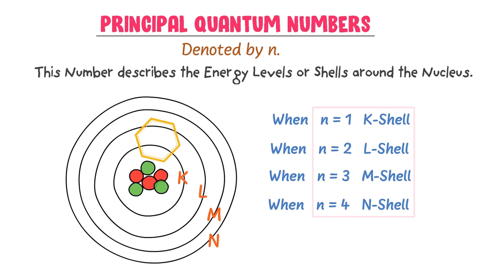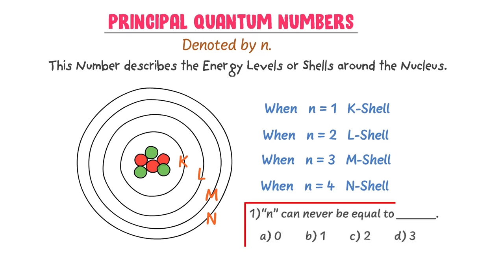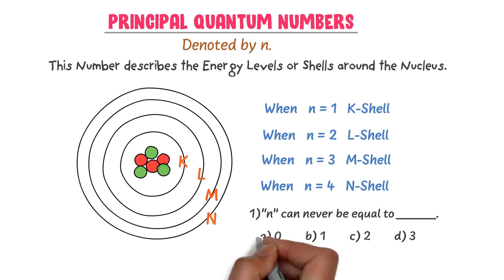Here is a bonus MCQ for you. n can never be equal to — zero, one, two, or three? Well the answer is zero. n can never be equal to zero because n starts from one and goes up to four.